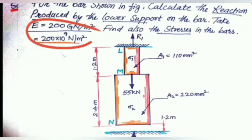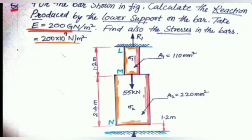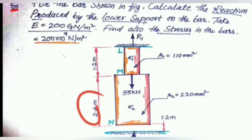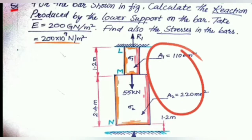Young's modulus E1 is the same for both materials, that is 200 giganewton per meter square. Check that all values are in consistent units — some areas are in millimeter square and lengths are in meters. Convert all to the same units. So 110 millimeter square equals 110 times 10 to the power of minus 6 meter square. That will be the area for both sections.